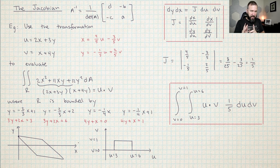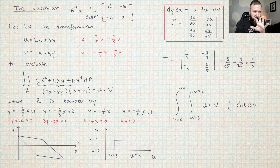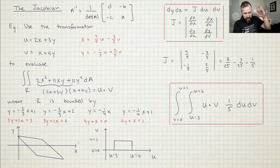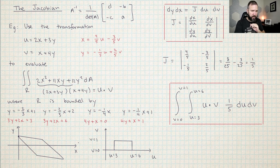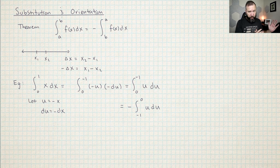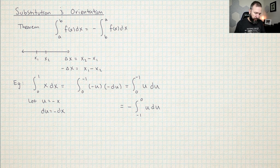We're not actually done — there is one more subtle point about the orientation of these regions. I may have flipped the region over, so positive regions may have turned into negative regions. Let's look at how this orientation issue could affect these problems. Like all things in Calc 3, if you're ever confused, bounce back to Calc 1 and remember how things work there, then copy and paste that into Calc 3.